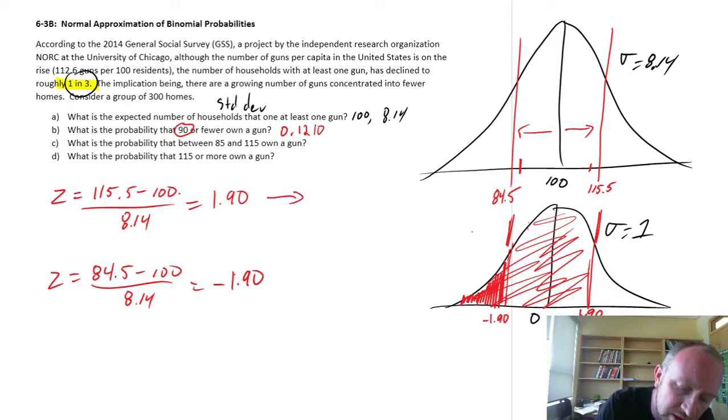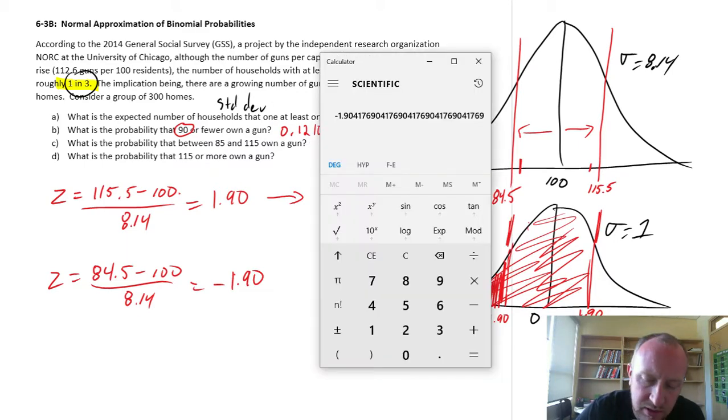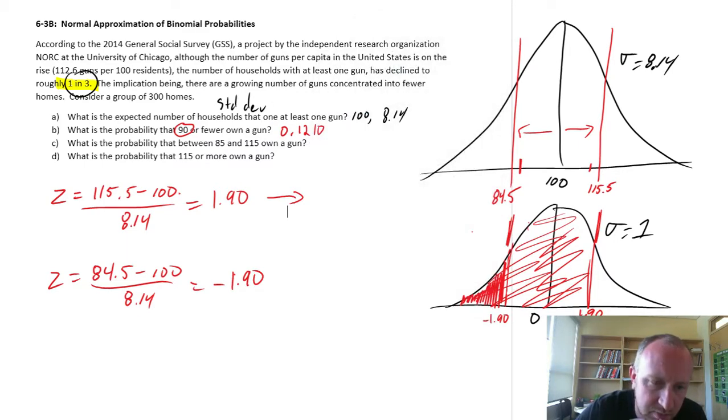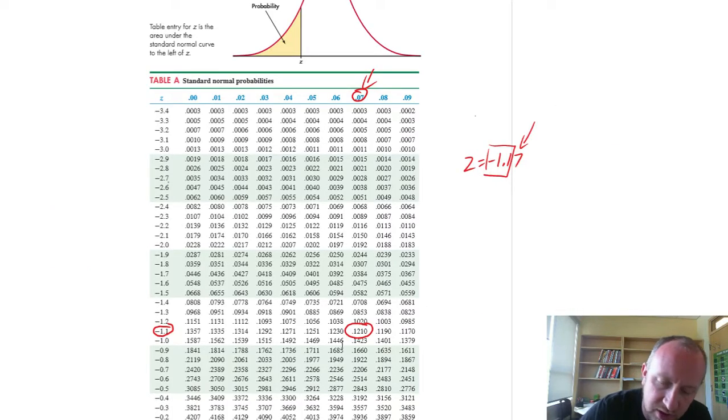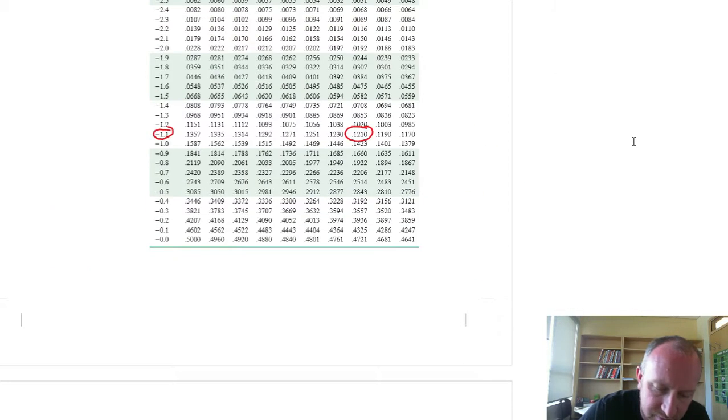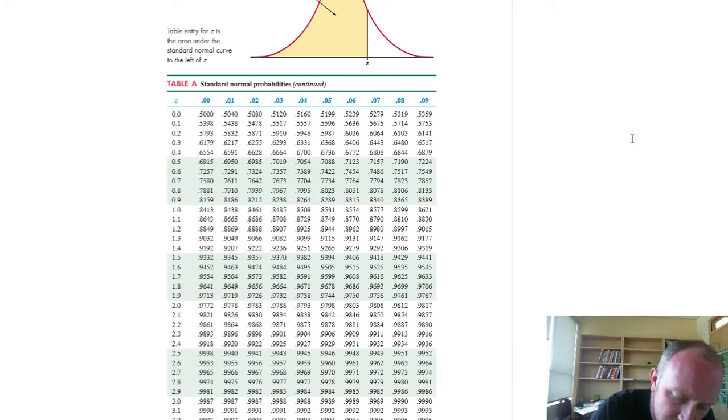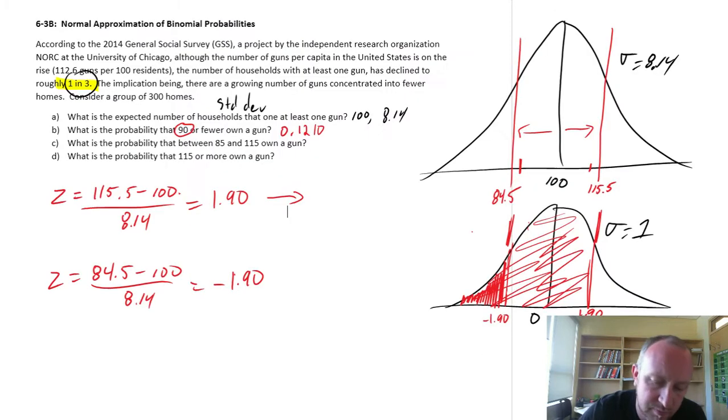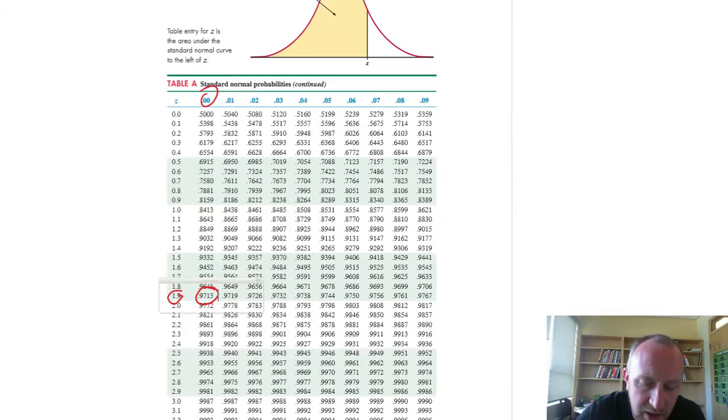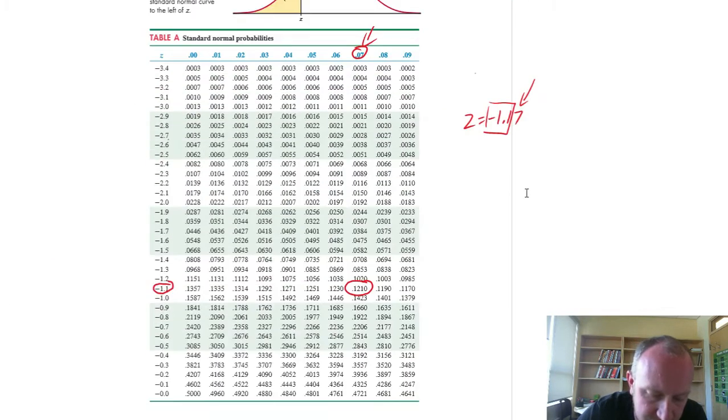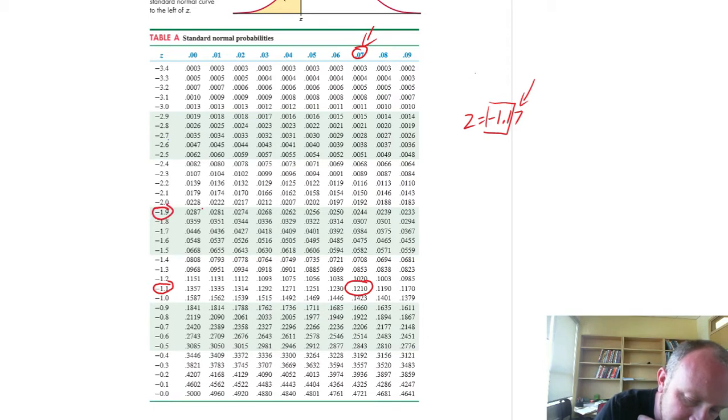So let's first look up positive 1.9. My z-table. Positive 1.9 is, there's 1.90, so it's 0.9713. This one here, negative 1.90 is 0.0287.